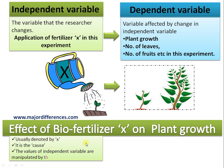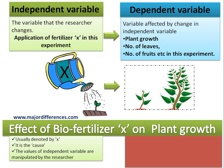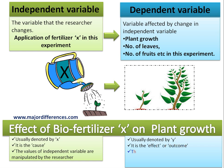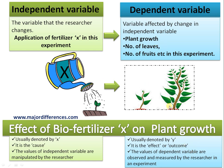The independent variable is denoted by X — it is the cause. The value of the independent variable is decided by the researcher: the amount of fertilizer to be applied is decided by the researcher. Whereas the dependent variable is denoted by Y — it is the effect, result, or outcome. The researcher has no role in determining the values of the dependent variable; he just observes and measures.